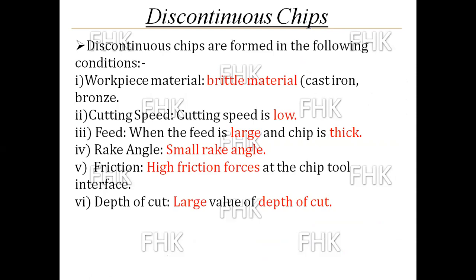The reasons for forming discontinuous chips are: when the workpiece material is brittle like cast iron or bronze; when cutting speed is low; when the feed is large and the chip is thick; when a small rake angle is provided to the tool; when there is high friction force at the chip-tool interface; and when a large depth of cut is used, removing material quickly — at that time you will get discontinuous chips and poor surface finish.